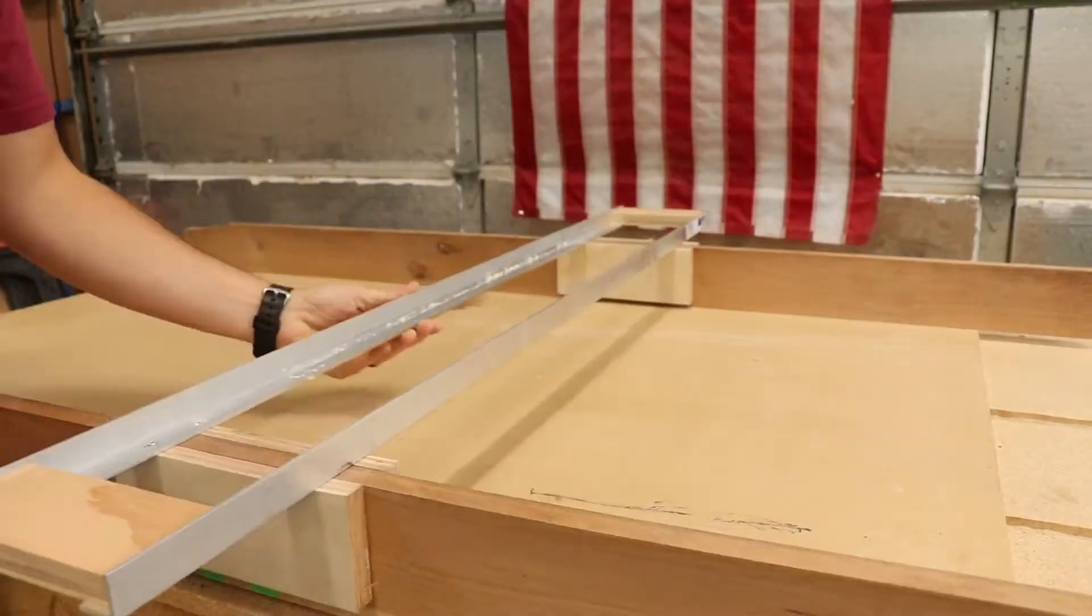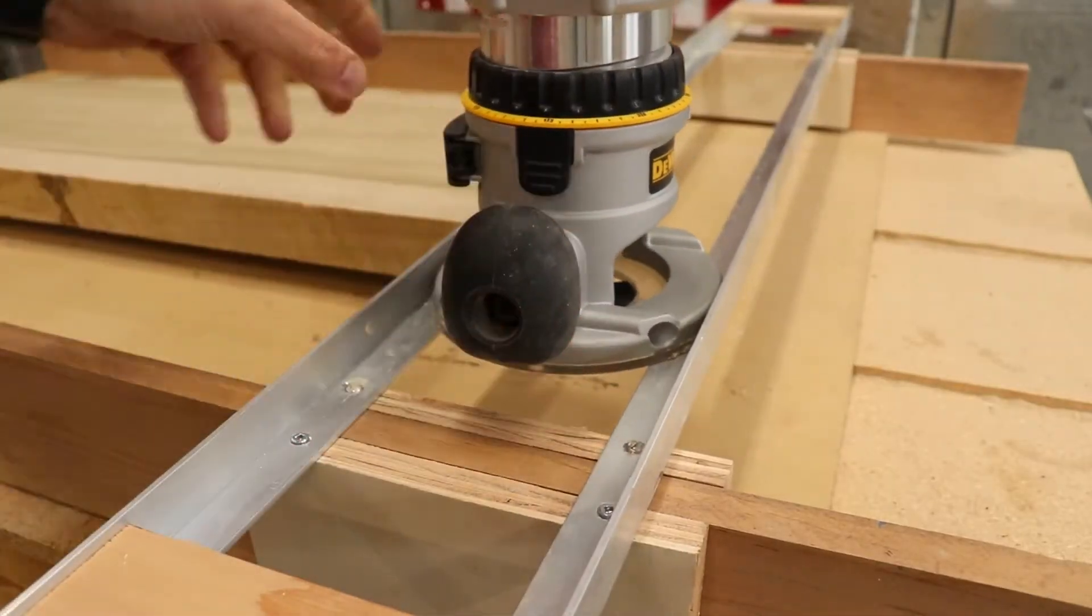So I started out by using my router sled to flatten one side of the poplar slab that's going to be in the middle.